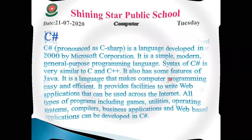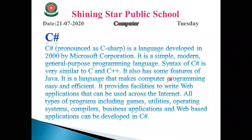Next is C Sharp — written as the hash symbol but pronounced 'C Sharp.' C Sharp is a language developed in 2000 by Microsoft Corporation. C Sharp is the advanced level of the C language and C++ language, and it is a general-purpose programming language.